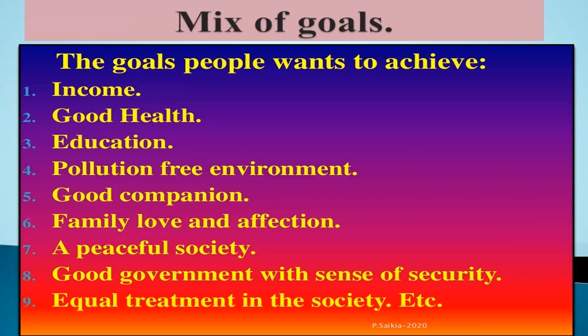Here is a starter list of goals people want to achieve: income, good health, education, pollution-free environment, good companions, family, love, affection, peaceful society, good governance, sense of security, and equal treatment in society. These are only a few examples — your list should go beyond mine and include your own ideas.